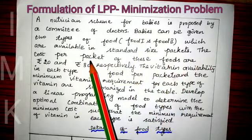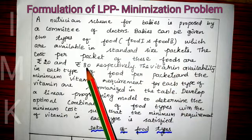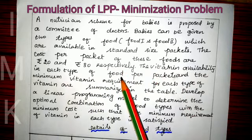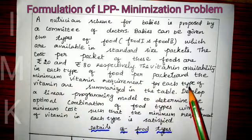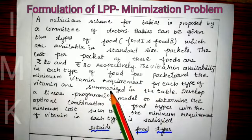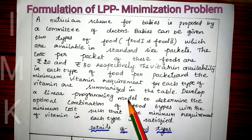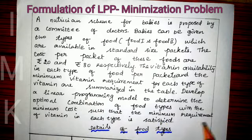The cost per packet of these foods are rupees 20 and rupees 30 respectively. The vitamin availability in each type of food per packet and the minimum vitamin requirement for each type of vitamin are summarized in the table. Develop a linear programming model to determine the optimal combination of food types with minimum cost such that the minimum requirement of each vitamin type is satisfied.